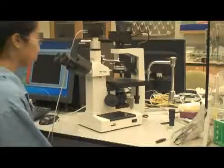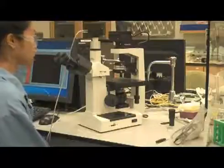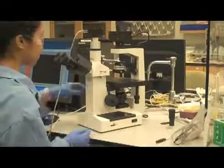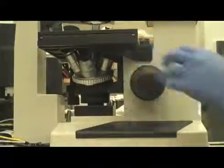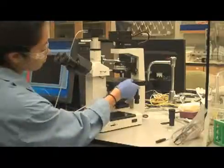Step 3: Slowly turn the coarse focusing knob until the working objective has moved all the way to the top, just underneath the stage of the microscope. Position the stage so that the objective lens is aligned with the opening on the stage.